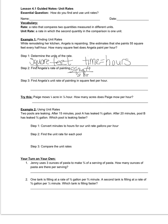So if she paints 55 square feet in one-half of an hour, I can use this to determine how many square feet she would paint in one hour. I multiply one-half times two, which gives me one whole, and 55 times two, which is 110. So her unit rate for painting is 110 square feet per hour.